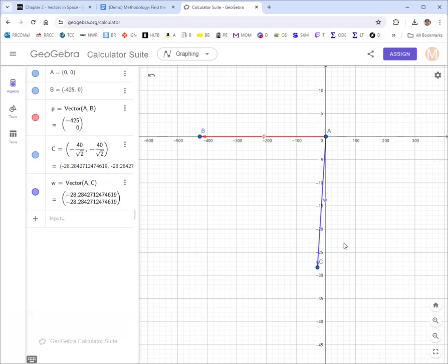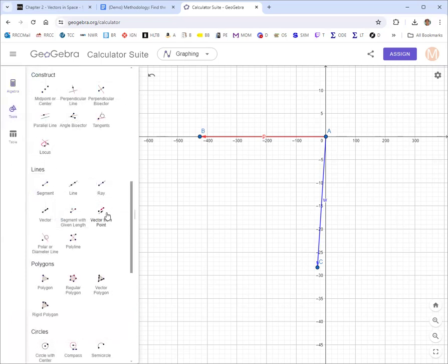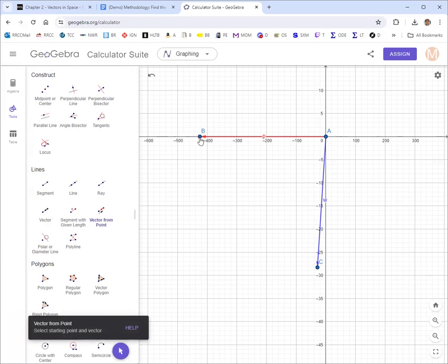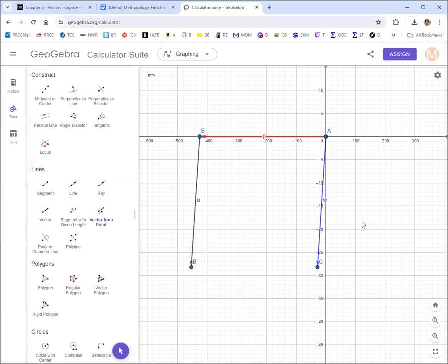Now you want to move the wind vector to start where the plane vector ends, adding them by drawing them head to tail. And to do that, we use a tool called vector from a point. So select the starting point and the vector. So the starting point is B. And then the vector is W. It'll automatically create a copy of that vector that starts where the other one ends. And now what we do is we put in our solution and it should connect point A to point B prime here and kind of complete the drawing.